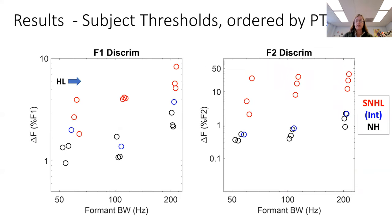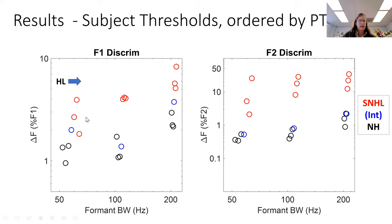These are the behavioral thresholds for F1 and F2. Note the different vertical axes, which are preserved on the following plots. The symbols for each bandwidth are ordered by hearing loss using pure tone average thresholds. As expected, listeners with hearing loss — the red symbols — had higher thresholds than the normal hearing listeners, and the thresholds generally go up with increasing hearing loss.